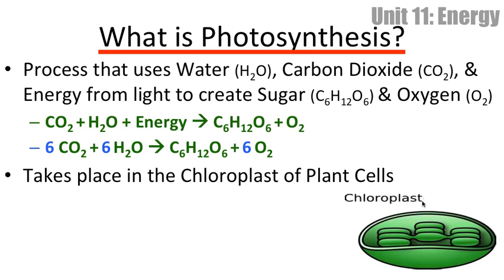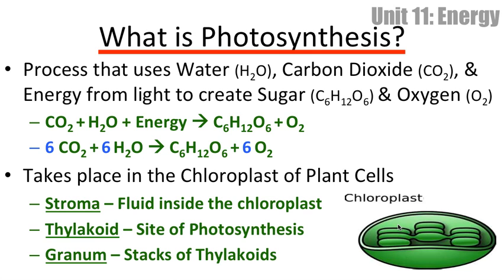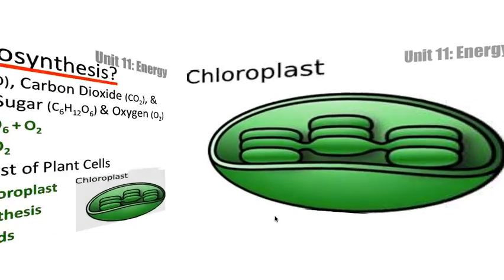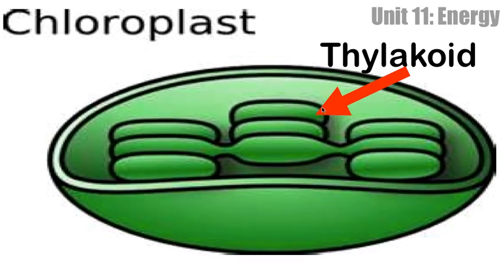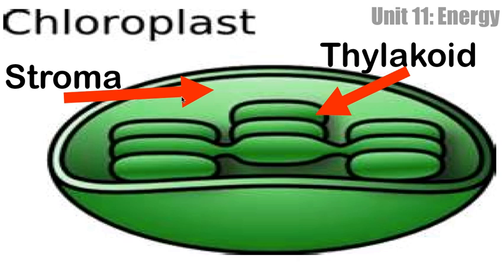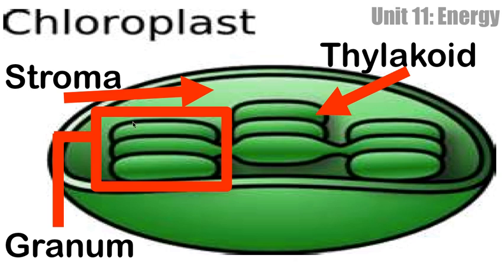Photosynthesis takes place in the chloroplast of cells — hopefully you remember that organelle from the beginning of the year. There are three parts of the chloroplast you need to know. There is the thylakoid, which looks like little coins inside the chloroplast — these are the site of photosynthesis. You need to know the stroma, which is the fluid space inside the chloroplast. And then the granum — they are the stacks of thylakoids.